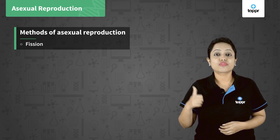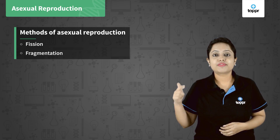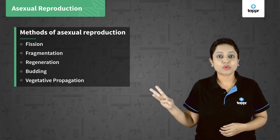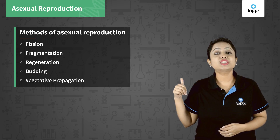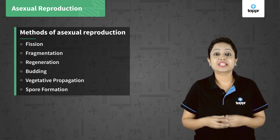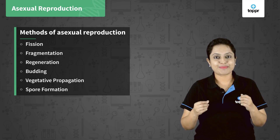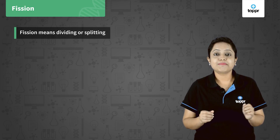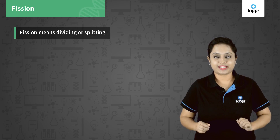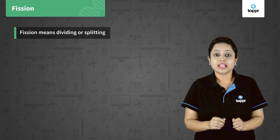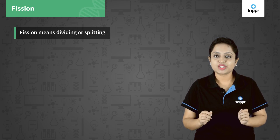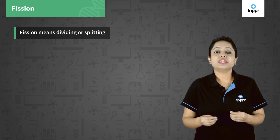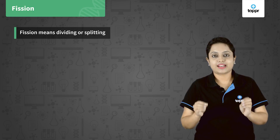There are various methods by which individuals reproduce asexually — for example, fission, fragmentation, regeneration, budding, vegetative propagation, and spore formation. We will discuss all of them one by one. Let's start with fission. Fission means dividing or splitting. In this, the organism divides or splits as a whole. It is mainly found in all unicellular organisms.